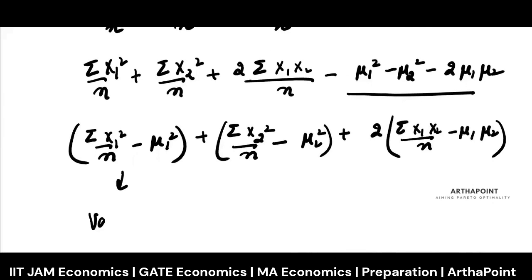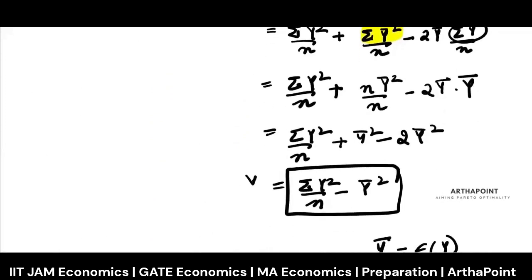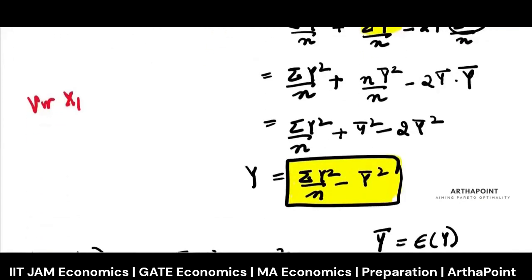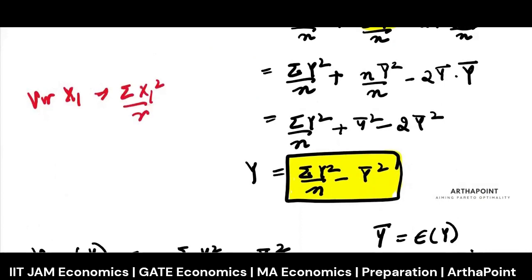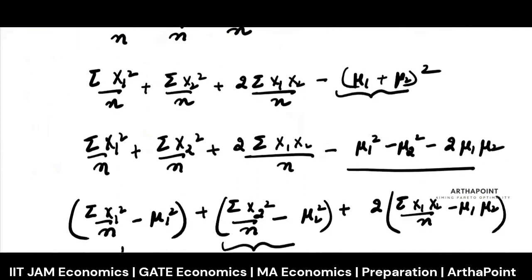The term ΣX1²/n − μ1² is nothing but the variance of X1, and ΣX2²/n − μ2² is the variance of X2. This follows from the same formula we derived for variance of any variable Y: Σy²/n − ȳ². Here X1 bar is μ1 and X2 bar is μ2.